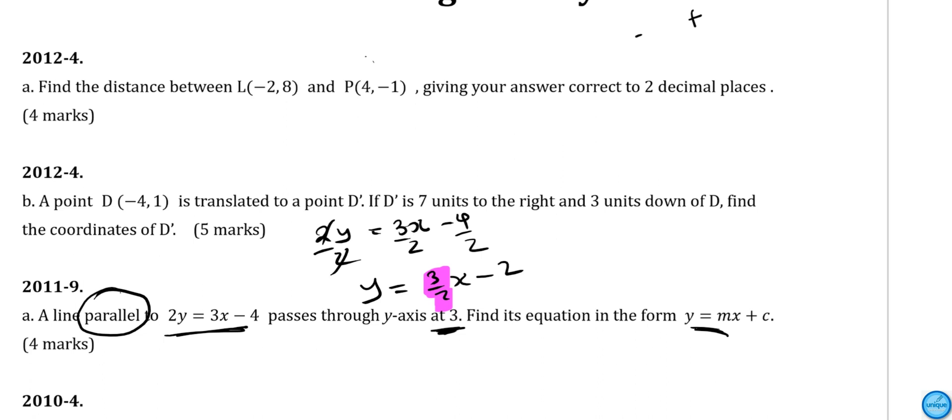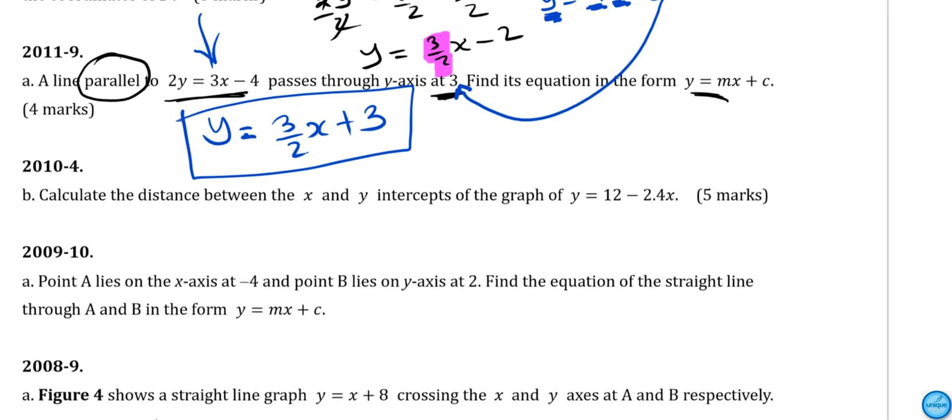That's our gradient. It passes through the Y axis where X is 0, which is the Y intercept. The equation of a straight line is Y equals MX plus C, where M is the gradient and C is the intercept. In this case, the gradient is 3 over 2. So the equation of that line is Y equals 3 over 2 X plus 3.